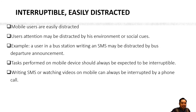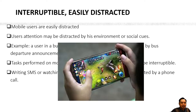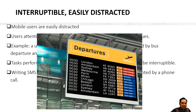Next we have interactable and easily distracted. These characteristics refer to the mobile users themselves rather than the network. While users can use the mobile application anywhere, they may also be susceptible to using it in a noisy environment that can easily distract their attention. For example, a user writing SMS or playing games in an airport might be distracted by an airport announcement. Tasks performed on the mobile device should be expected to be interruptible.